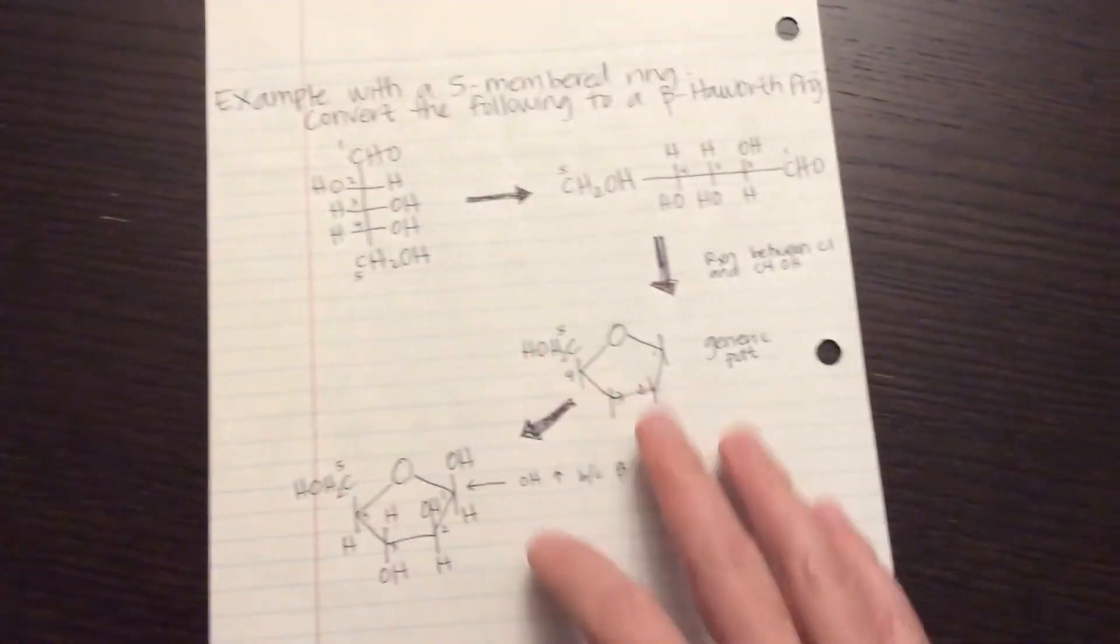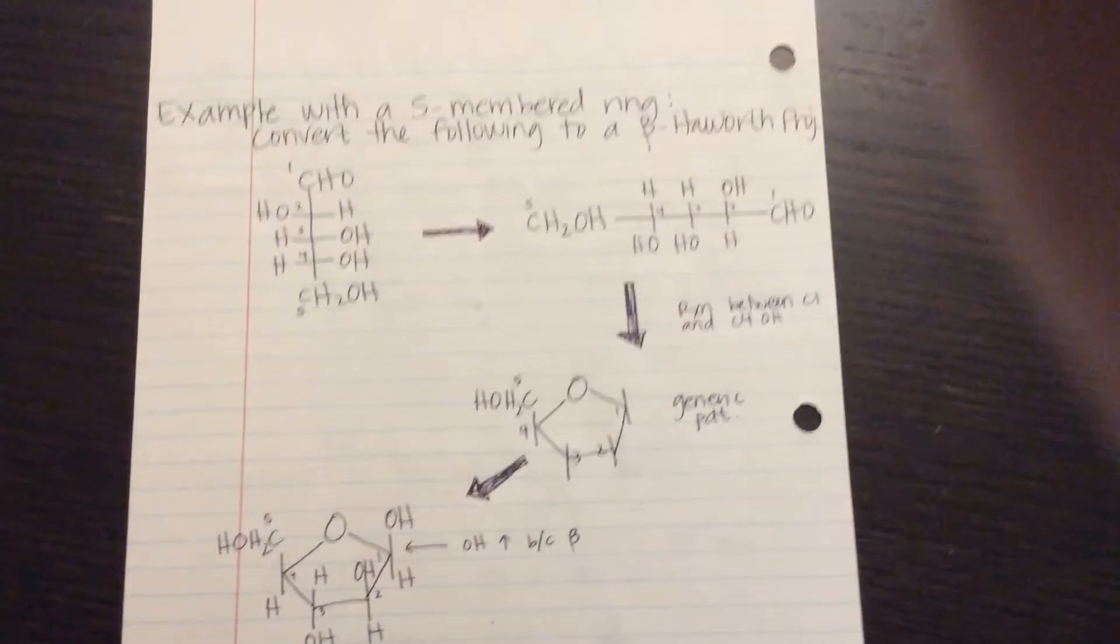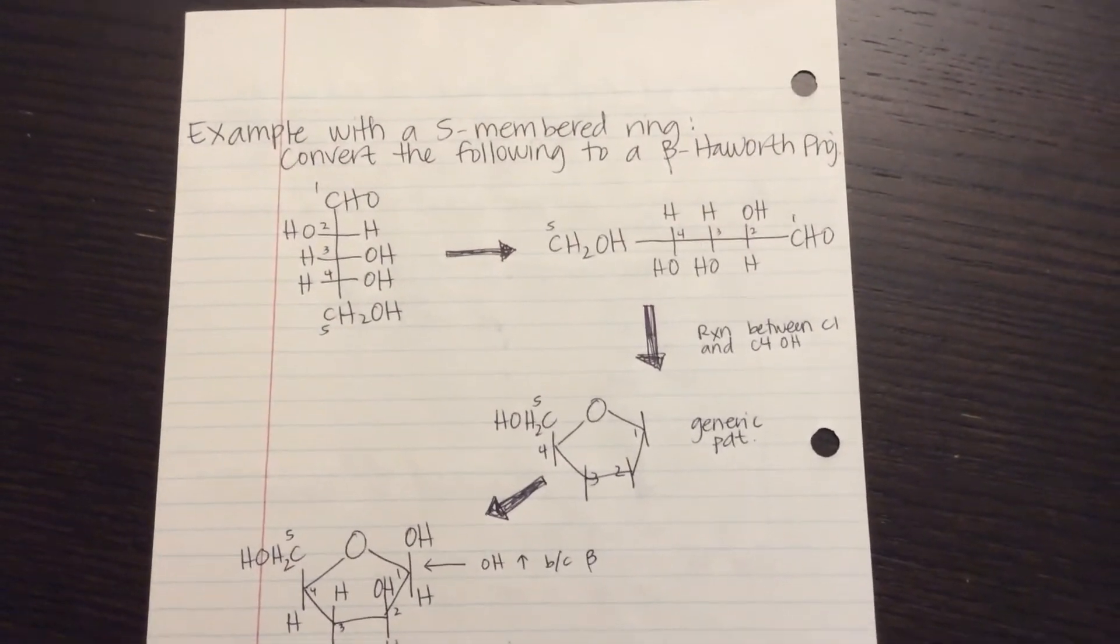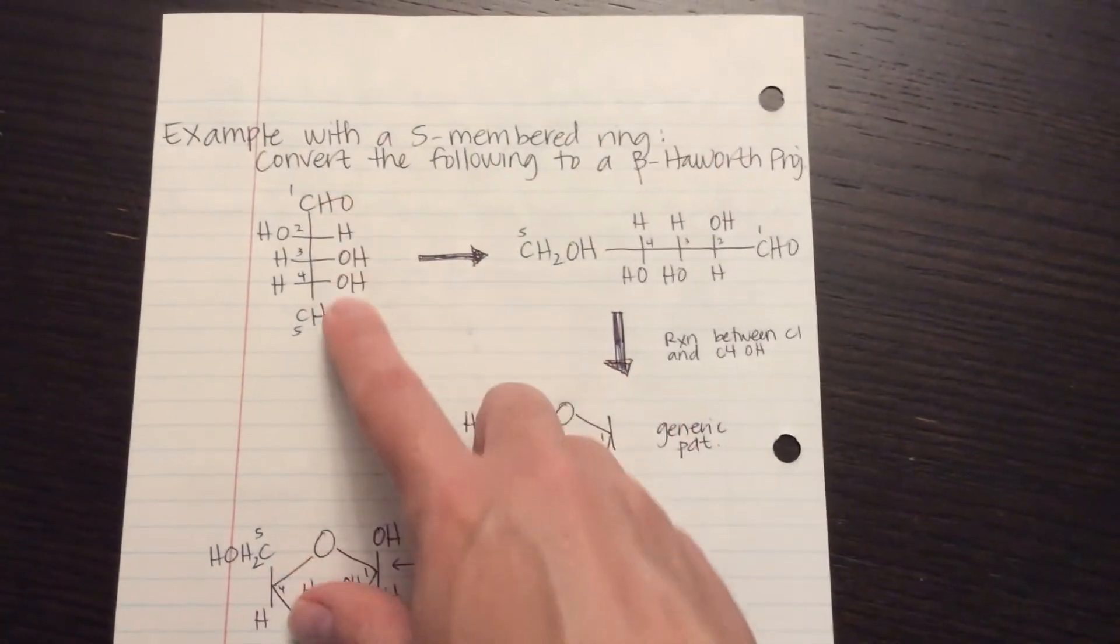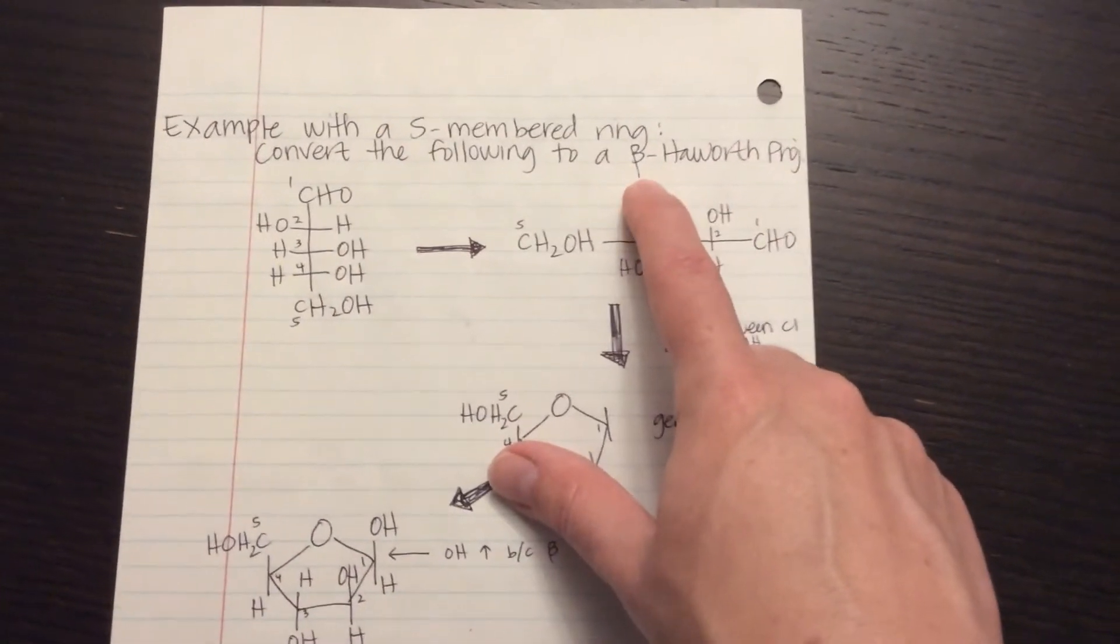Now let's look at what it would look like if it were a smaller sugar. So that was a six-membered ring example. Here would be a five-membered ring. So this is a shorter sugar. This time I want it in beta just for fun.